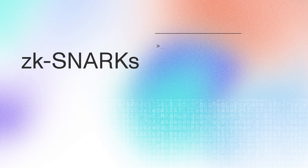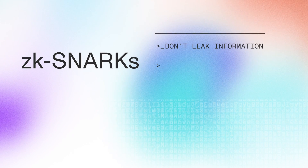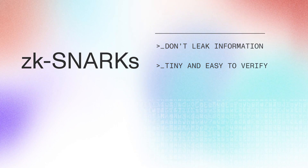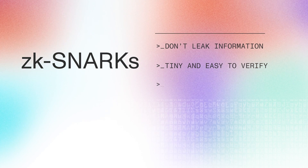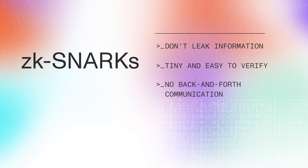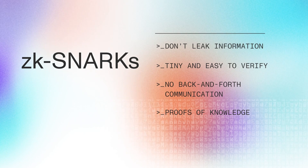All ZK-SNARKs have these properties: they don't leak information, they are tiny and easy to verify even if the notion being proven is complicated, they don't require back-and-forth communication, and they are proofs of knowledge — the prover must actually know the thing being claimed, not just that it is true.